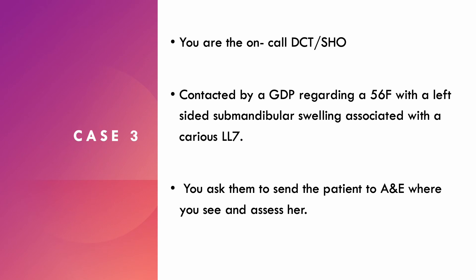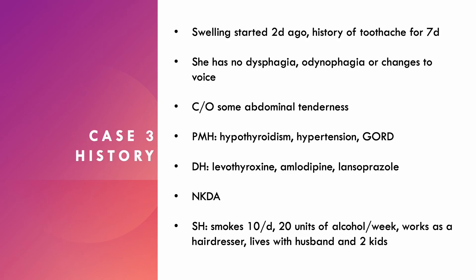Moving on to case three: you're the on-call DCT or SHO when you're contacted by a GDP regarding a 56-year-old female with a left-sided submandibular swelling associated with a carious lower left seven. You ask them to send the patient to A&E where you see and assess them. The swelling started two days ago with a seven-day history of toothache. She has no dysphagia, odynophagia, or voice changes. She does have some abdominal tenderness.